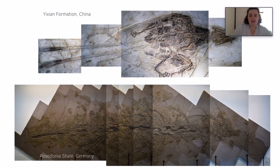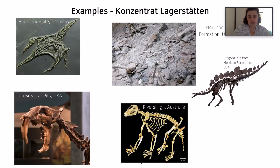We also have the Yixian Formation in China. And here's another example from the Posidonia Shale in Germany. Examples of concentrat Lagerstätten include the Hunsrück Slate in Germany and the Morrison Formation in the USA, which is a Jurassic-aged fossil locality where we can get those dinosaurs from.